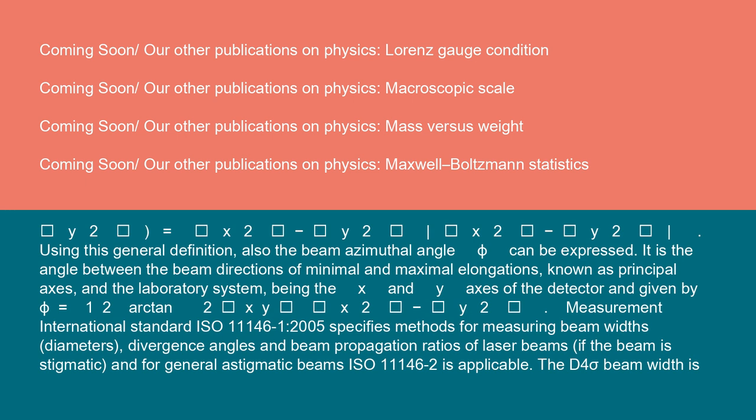And γ = sgn(⟨x²⟩ - ⟨y²⟩). Using this general definition, also the beam azimuthal angle φ can be expressed. It is the angle between the beam directions of minimal and maximal elongations, known as principal axes, and the laboratory system, being the X and Y axes of the detector, and given by φ = (1/2)arctan(2⟨xy⟩/(⟨x²⟩ - ⟨y²⟩)).